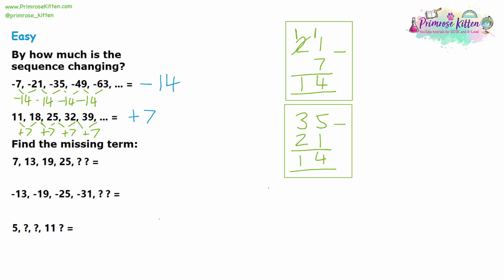As well as being asked by how much the sequence is changing, you might be asked to find specific missing terms. It's exactly the same method. So we look at our sequence: 7, 13, 19, 25. We think about what it's going up by each time. 7 plus 6 is 13 — we check: 13 plus 6 is 19, and 19 plus 6 is 25. After checking 2 or 3 terms, we're confident it's linear and going up by 6. So from 25 to the next number, we also add 6: 25 plus 6 is 31. The missing term is 31.